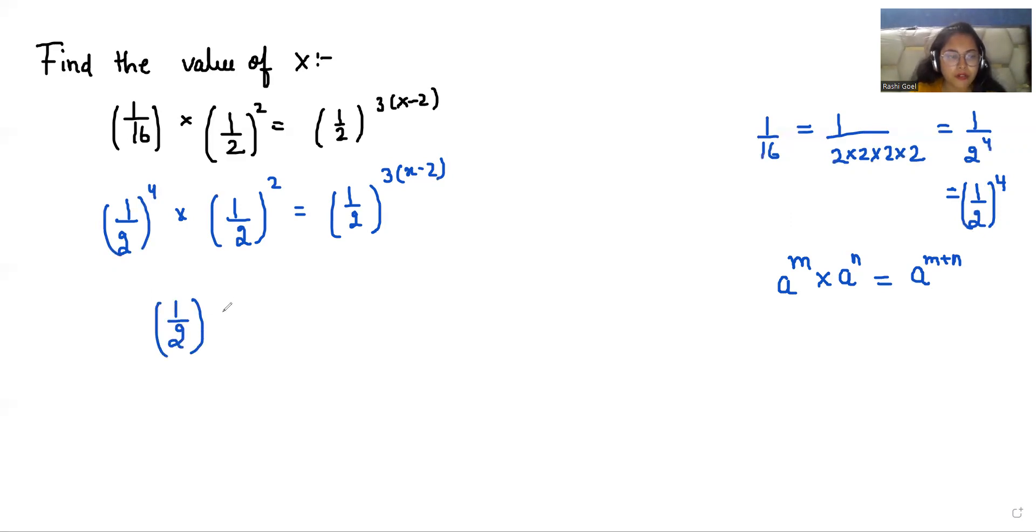So (1/2)^(4+2) = (1/2)^(3(x-2)). Therefore, (1/2)⁶ = (1/2)^(3(x-2)).